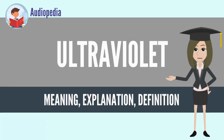Ultraviolet. Ultraviolet, or UV, is electromagnetic radiation with a wavelength from 10nm to 400nm, shorter than that of visible light but longer than X-rays.